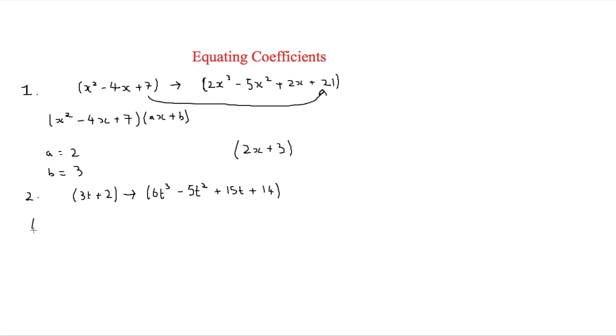And for this one it will be 3t plus 2. And this will be times by a quadratic instead. And to write this you'll simply do at squared plus bt plus c.